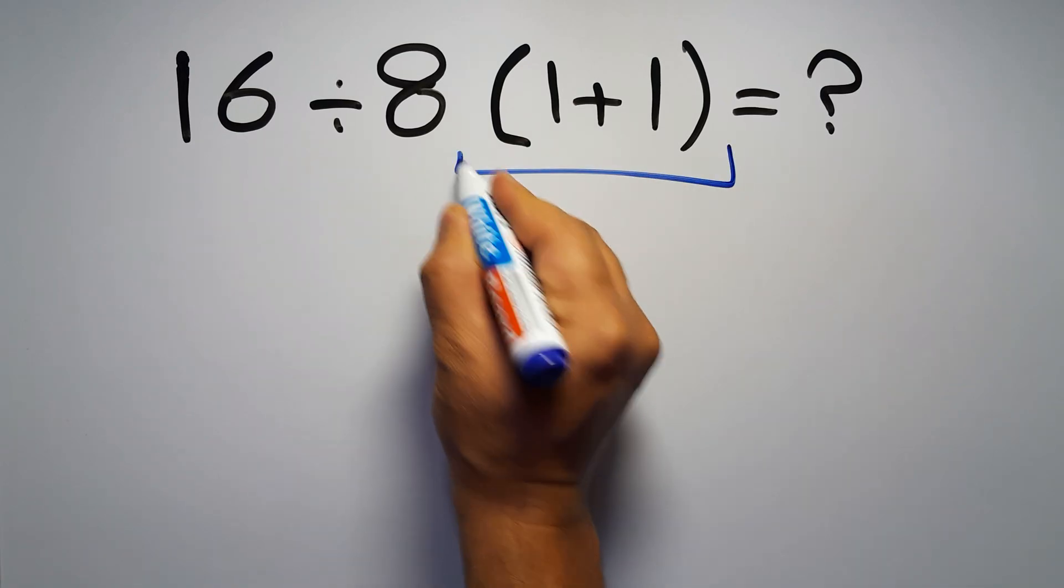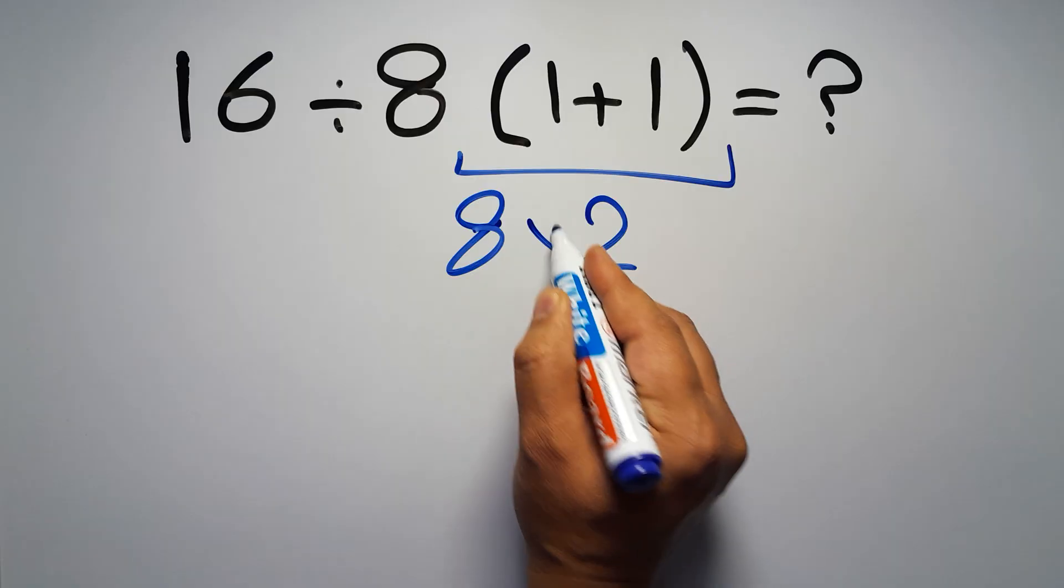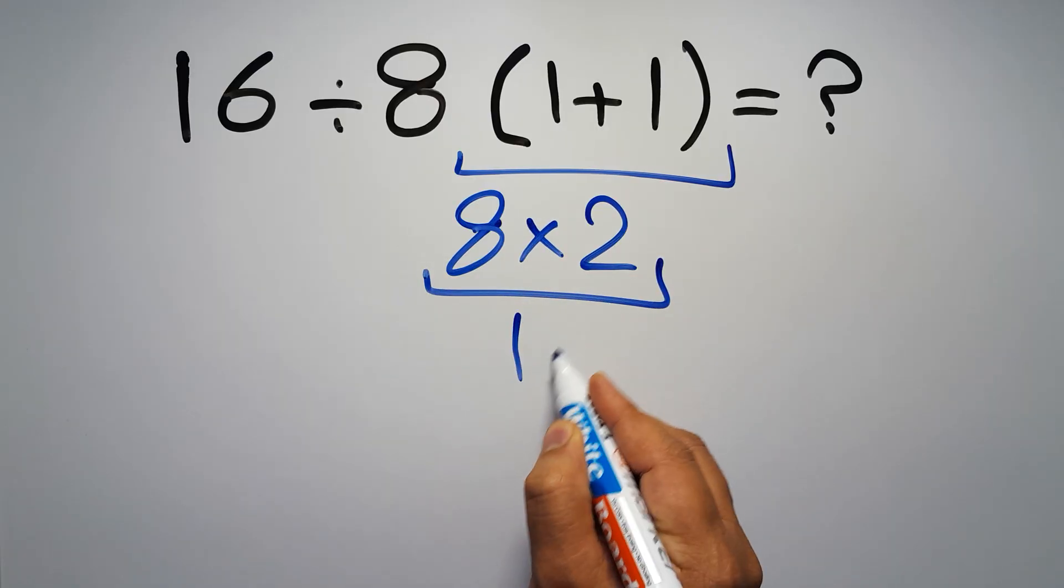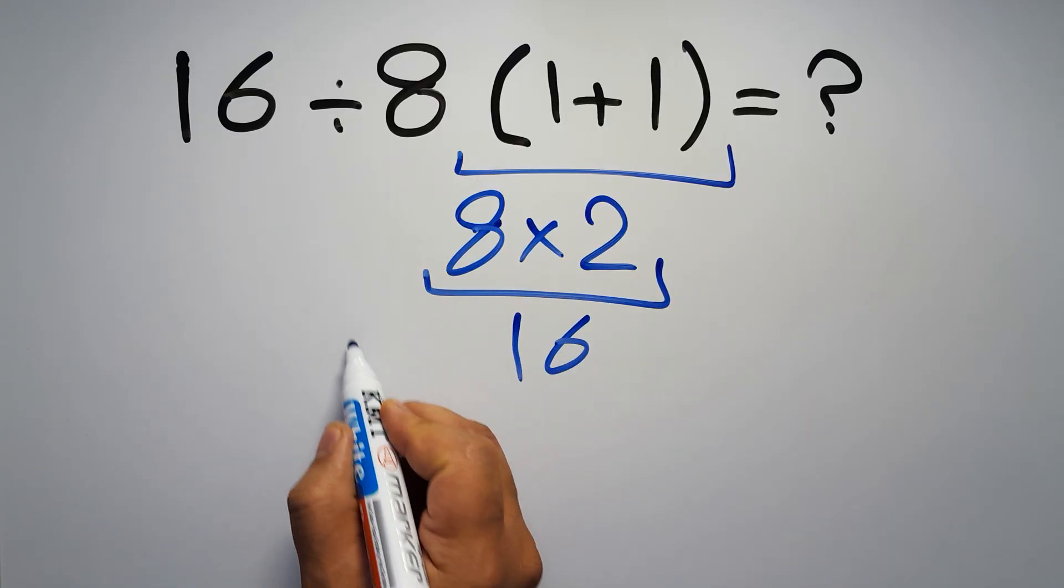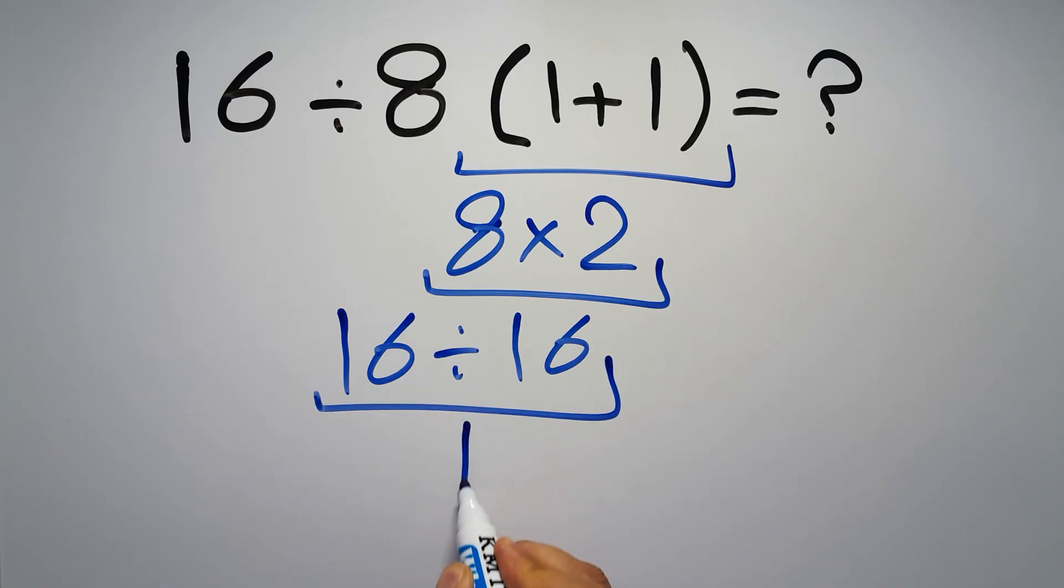1 plus 1 equals 2, and 8 times 2 gives us 16, so 16 divided by 16, which equals 1, but this answer is not correct,